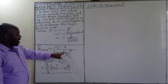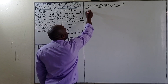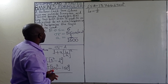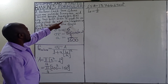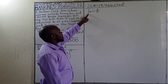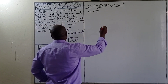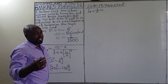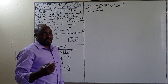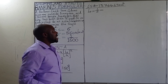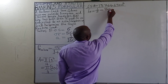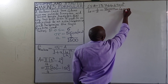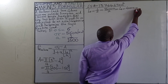From there, we determine the effective length. Since both ends of this column are fixed, the effective length is given by the actual length divided by 2. The length of this column is 8 meters, which converts to 8,000 millimeters. So the effective length is 8,000 divided by 2, giving us 4,000 millimeters.